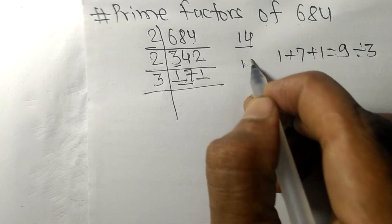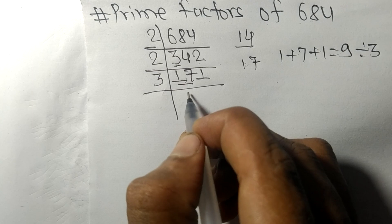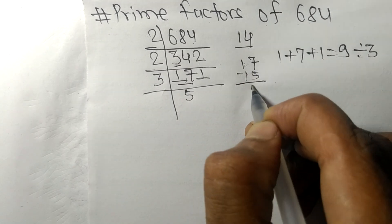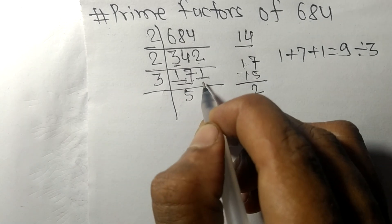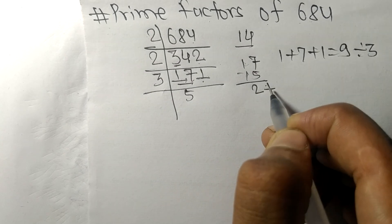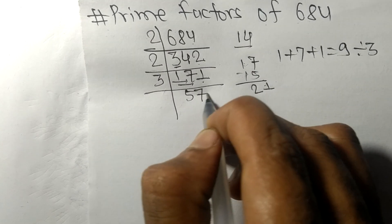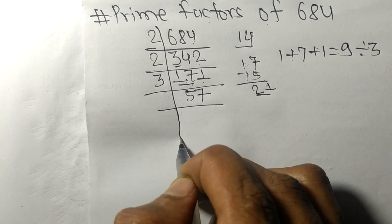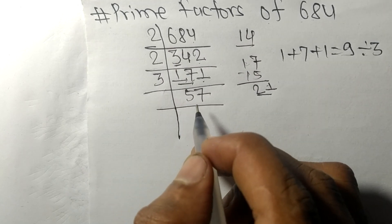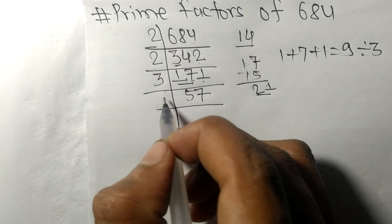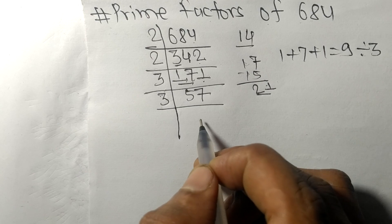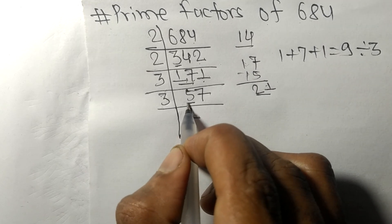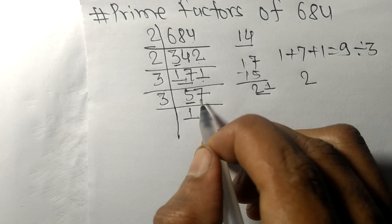3 times 5 is 15, remainder 2; and 21 — 3 times 7 is 21. So now we got 57, which is exactly divisible by 3. 3 times 1 is 3, remainder 2; and 27 — 3 times 9 is 27.